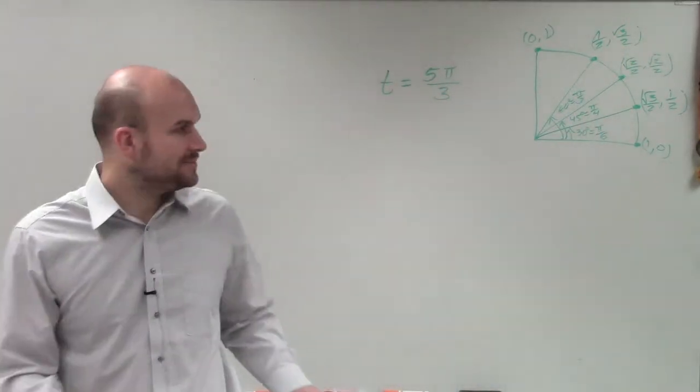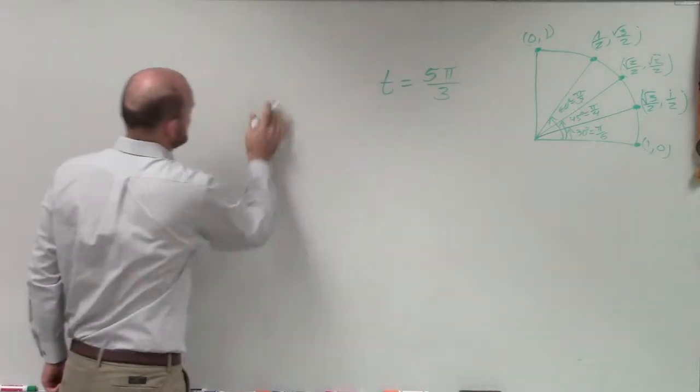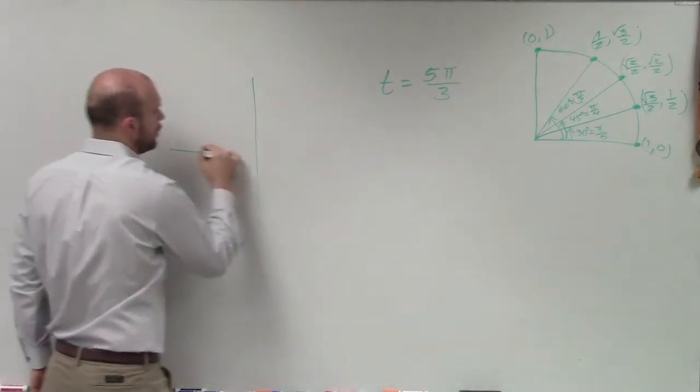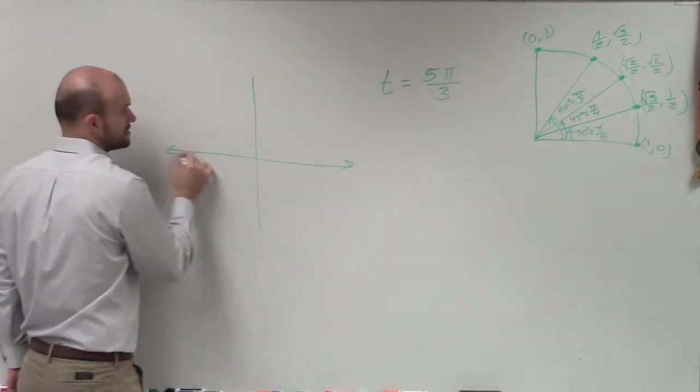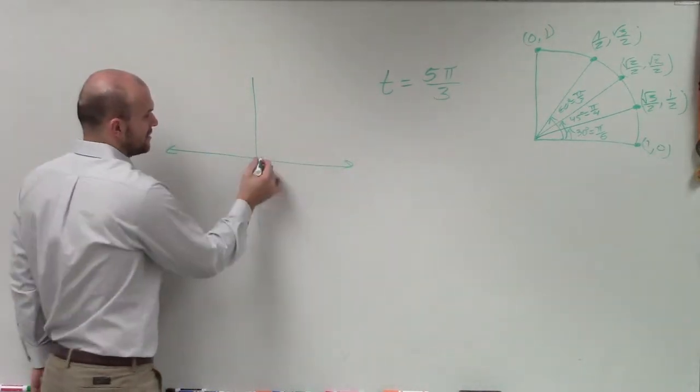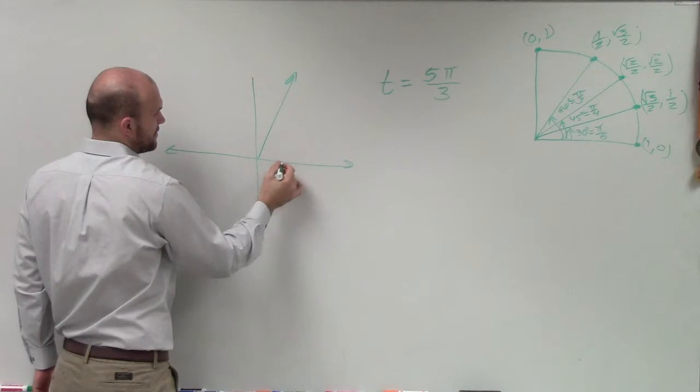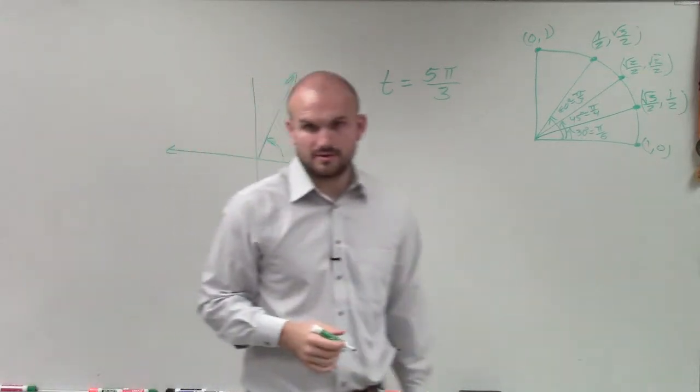So what I'm noticing here, ladies and gentlemen, is when I want to determine this point, I need to determine what all the points are on the unit circle for π thirds. So if I know this angle here is π thirds, right?